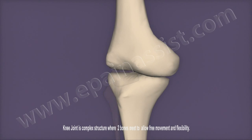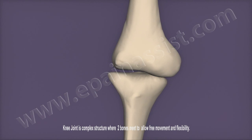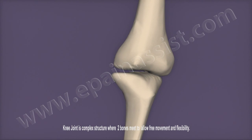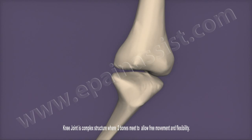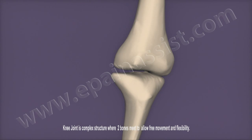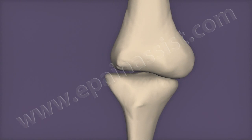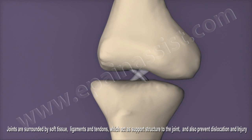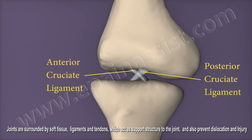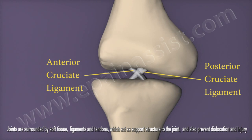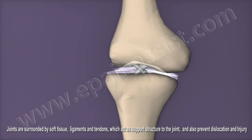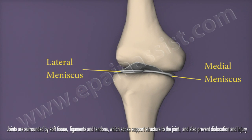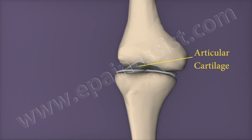A joint is a complex structure where two bones meet to allow free movements and flexibility. Joints are surrounded by tissue ligaments and tendons, which act as support structures to the joint and also prevent dislocation and injury.